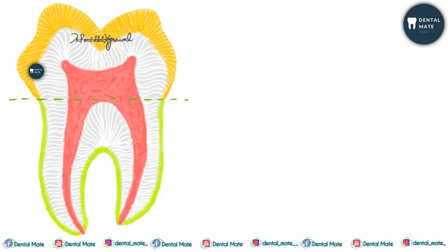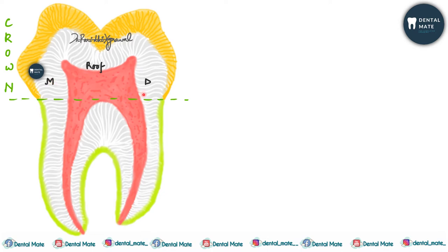Moving on to the anatomy of the pulp — if we divide the tooth into crown and root, the pulp present in the crown is known as the coronal pulp. It has six surfaces: mesial, distal, roof of the pulp chamber, floor of the pulp chamber, and the buccal/labial and lingual/palatal surfaces which cannot be shown in the front view.